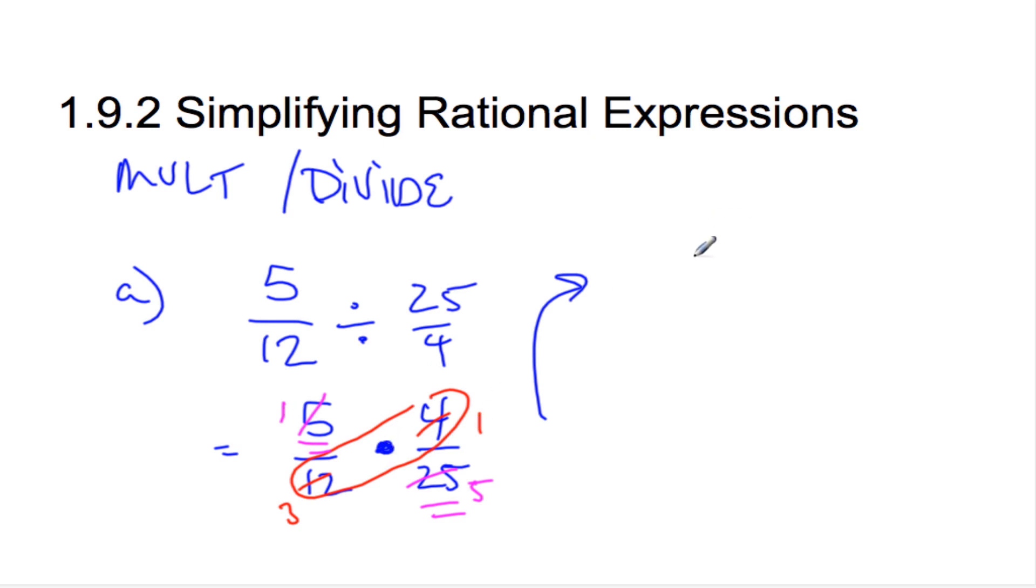And so when I put these together, I go 1 times 1 is 1. 3 times 5 is 15. So I actually multiply straight across. Looks good.